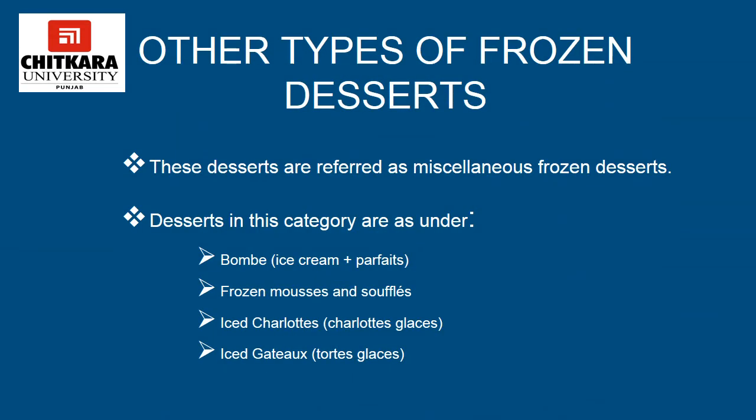Other types of frozen desserts, also referred to as miscellaneous frozen desserts, include the bomb, frozen mousses and soufflés, iced charlottes, and iced gâteaux. The bomb is one of the most elegant frozen desserts, often elaborately decorated with fruits, whipped cream, petit fours, and other items after unmolding. It is made by lining a chilled mold with a layer of ice cream or sorbet and freezing it hard. The center is then filled with a bomb mixture of compatible flavor and frozen again.